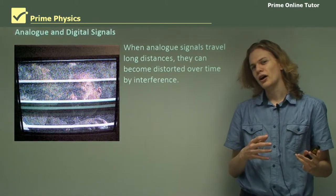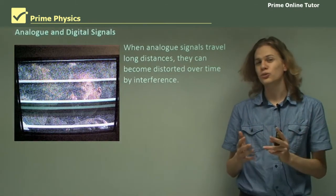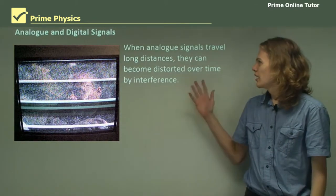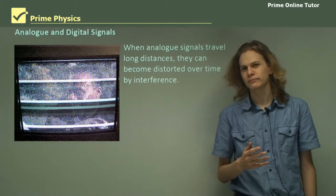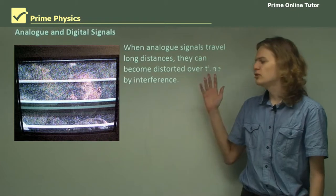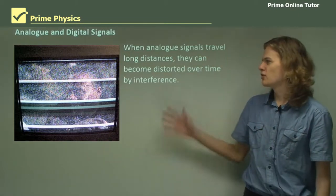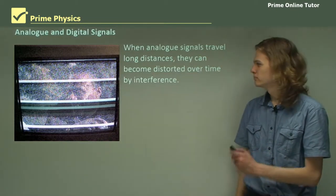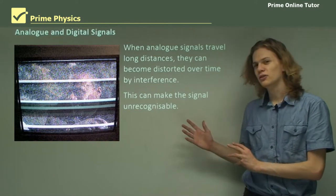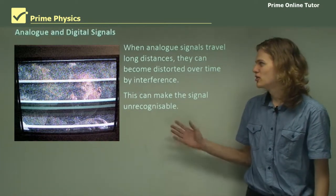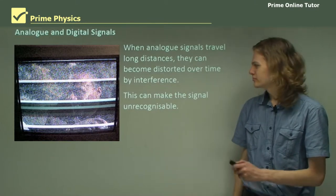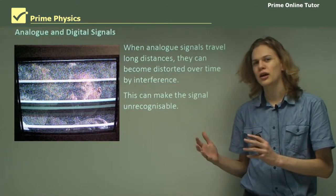We know from our studies on analog and digital signals that analog signals can lose fidelity when they're transmitted long distances. They can become distorted by interference leading to pictures like this on a TV. This can make the signal unrecognizable. In the worst case it can reduce the signal to static, which is just random data without any form.